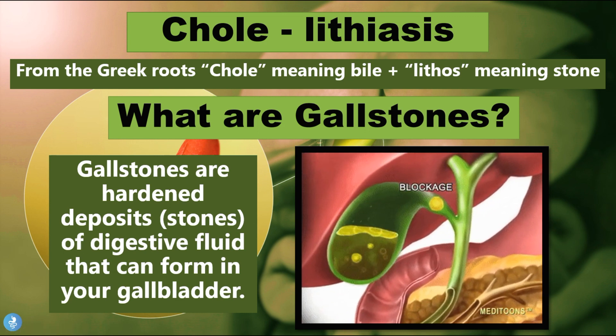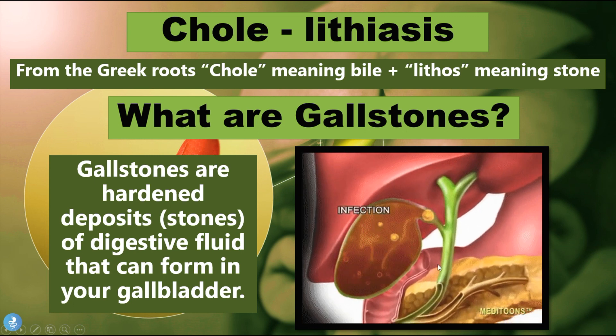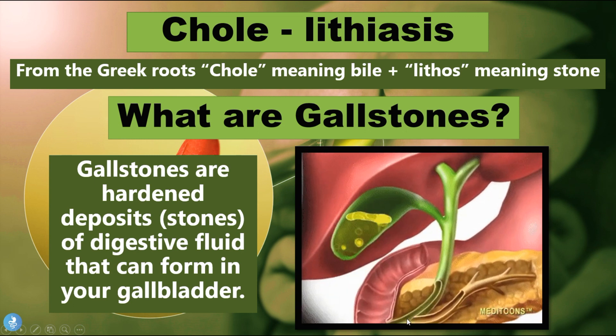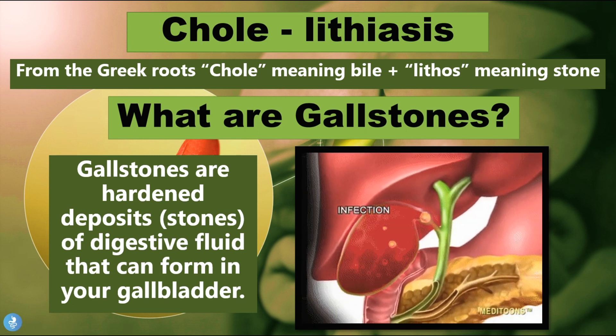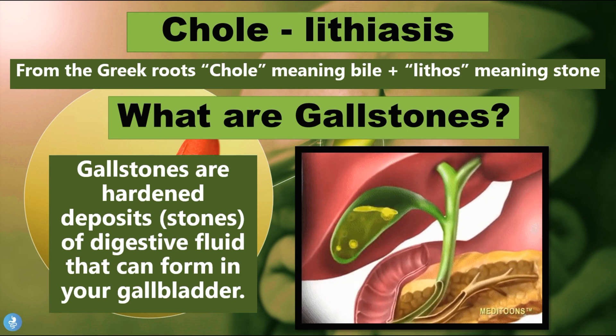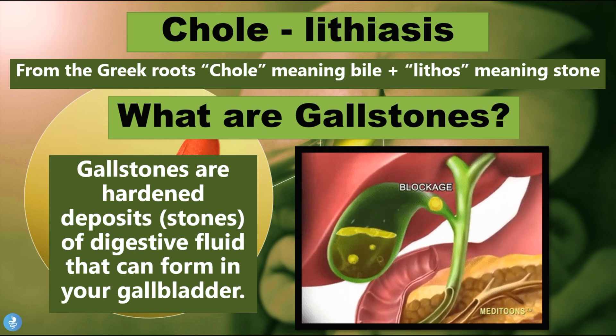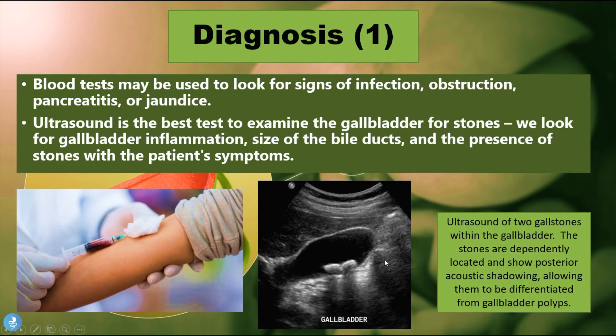A gallstone can also go on to block the pancreatic duct, which can cause the onset of pancreatitis for the patient. There will also be an increase in bilirubin, because if we have a stasis of bile we're going to have increased values of bilirubin in the blood. These are all markers in the blood that may indicate a gallstone disease.